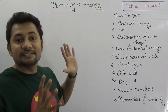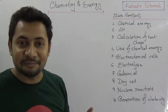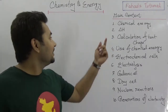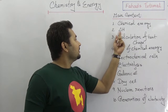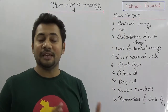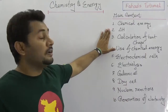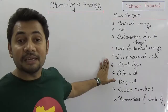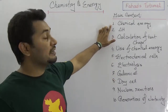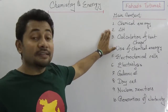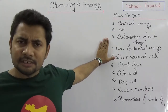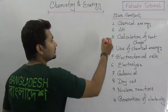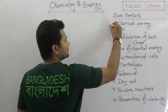What are the main contents of this chapter? There are a lot of things and a lot of mathematical problems. I have written here only one single word: del H, that is the amount of heat which is changing in case of reactions. But there are a number of mathematical problems that we need to solve. The main content of this chapter is chemical energy — we need to think about del H and the calculations of heat energy.